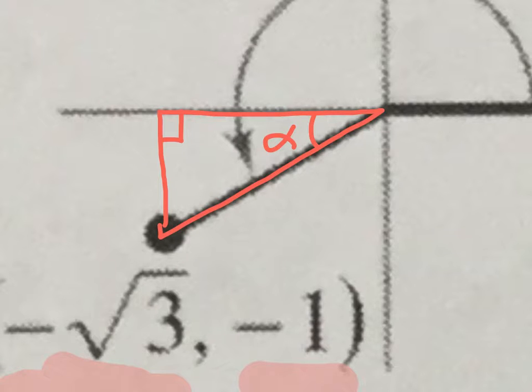So negative root 3 is the x and negative 1 is the y value. X is always a horizontal length and y is always a vertical length. What we need to do first is figure out what the radius is.